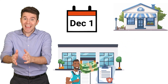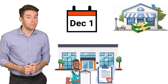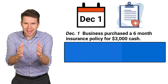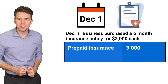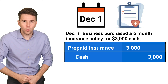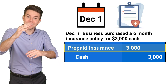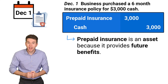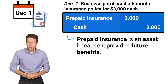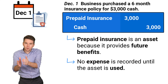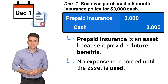For example, if you buy a six-month insurance policy on December 1st and pay $3,000 cash up front, you have a prepaid expense. To record the prepayment, we debit prepaid insurance for $3,000 and credit cash for $3,000. We debit prepaid insurance to increase that asset account. Prepaid insurance is an asset because of the future benefits of having insurance coverage. Also, note that we don't initially record any expense, because we have to spread it out over the six months that we have the coverage.